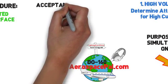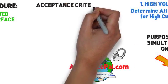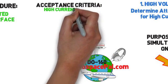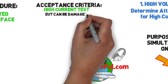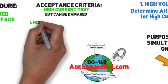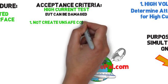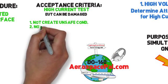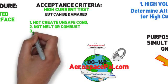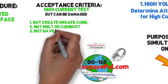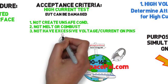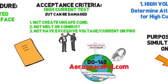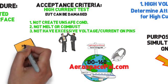High voltage tests can also determine the adequacy of any dielectric material protection on your EUT. For high current tests, the EUT is not expected to be fully operational after this test. Typically the EUT should not create an unsafe condition, should not melt or combust, and should not create a high voltage seen at the EUT cabling harness. If your product has a specific voltage or current requirement for your EUT pins, make sure to specify this on the qualification test procedure.